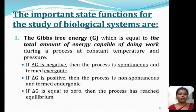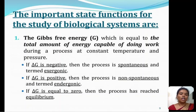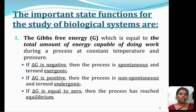An important state function for the study of biological systems is the Gibbs free energy, G, which equals the total amount of energy capable of doing work during a process at constant temperature and pressure. If delta G is negative, then the process is spontaneous and termed exergonic. If delta G is positive, then the process is not spontaneous and termed endergonic. If delta G equals zero, then the process has reached equilibrium.